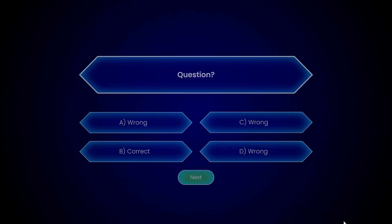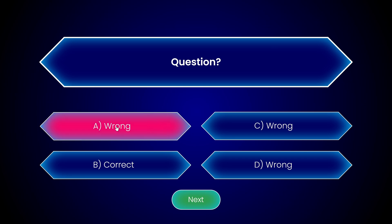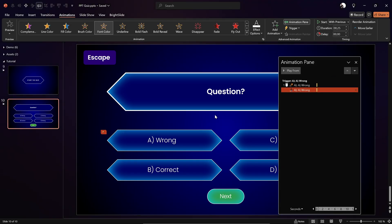Let's check it out again. Clicking around doesn't work because we're in kiosk mode — that's nice. Once we click on this wrong answer, the background becomes red and the text stays white. This is exactly what we want.